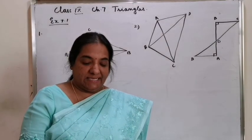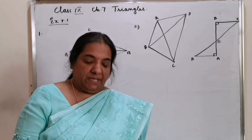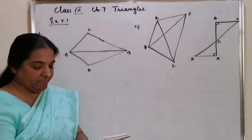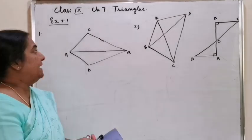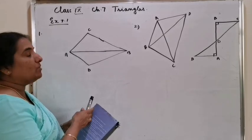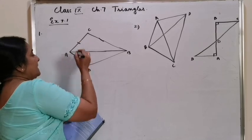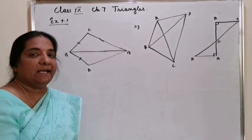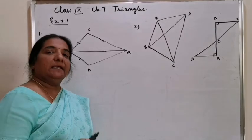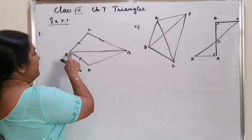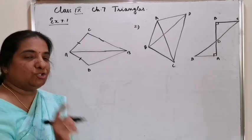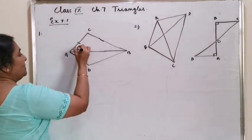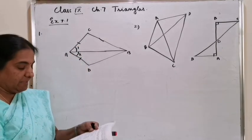Let's proceed with exercise 7.1. The first question: in quadrilateral ACBD, AC equals AD — so the lengths AC and AD are equal. The second condition is AB bisects angle A, meaning it cuts angle A into two equal parts. You can call the two parts angle 1 and angle 2. Show that triangle ABC is congruent to triangle ABD.